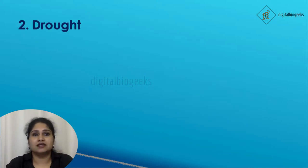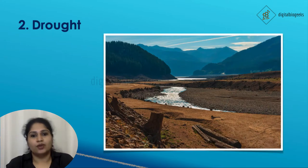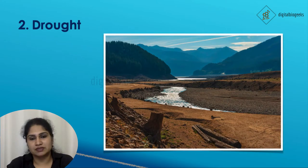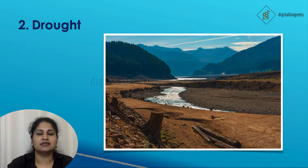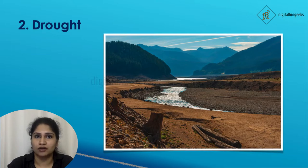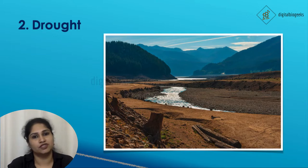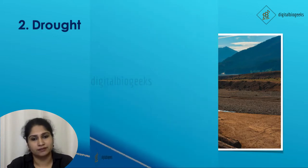Next is drought. When deforestation happens there is a decrease in rainfall, which lowers the groundwater level, leading to drought.